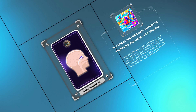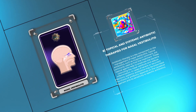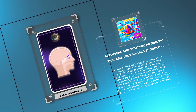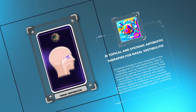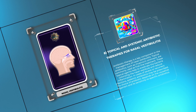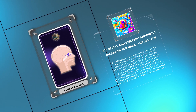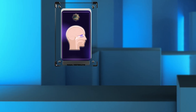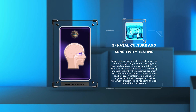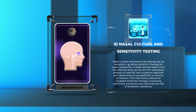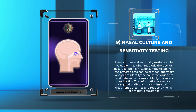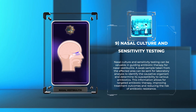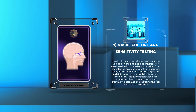Antibiotic therapy is a key component in the management of nasal vestibulitis. Topical antibiotics, such as mupirocin ointment, are commonly used as first-line treatment. These topical agents help to eradicate the bacteria colonizing the nasal vestibule and reduce inflammation. In cases of severe or recurrent infections, systemic antibiotics may be prescribed. The choice of antibiotic depends on the causative organism and its sensitivity to specific antibiotics. Nasal culture and sensitivity testing can be valuable in guiding antibiotic therapy, allowing for targeted treatment, improving outcomes, and reducing the risk of antibiotic resistance.